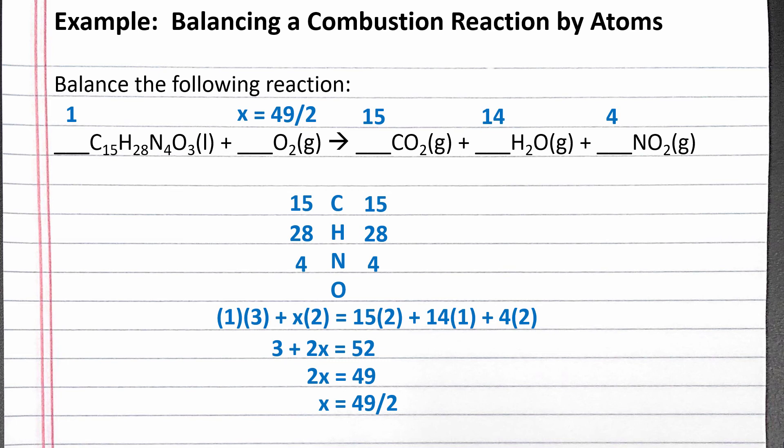In our balanced chemical equation, we want the smallest whole number coefficients, so we'll need to multiply all of our coefficients by 2 to get rid of the fraction. We end up with coefficients of 2, 49, 30, 28, and 8.